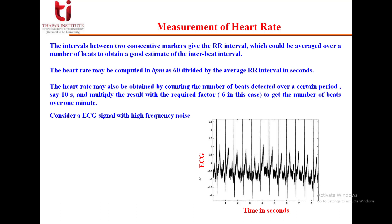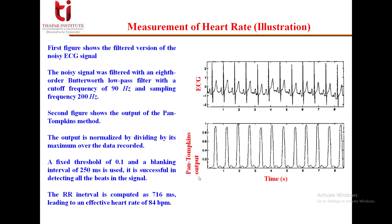For the first illustration, consider an ECG signal with high-frequency noise. The signal is filtered with an 8th-order Butterworth low-pass filter with a cutoff frequency of 90 Hz and sampling frequency of 200 Hz. The second figure shows the Pan-Tompkins output, normalized by dividing by the maximum over the recorded data. Using a fixed threshold of 0.1 and a blanking interval of 250 ms for successful detection of all beats, the RR interval is computed as 716 ms, leading to an effective heart rate of 84 beats per minute.